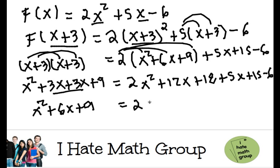Now, my final answer, 2x squared. I can go ahead and group 12x with 5x, and this is going to be 17x, and now I can do 18 plus 15 minus 6, which when you do the math, that's going to be equals to 27.